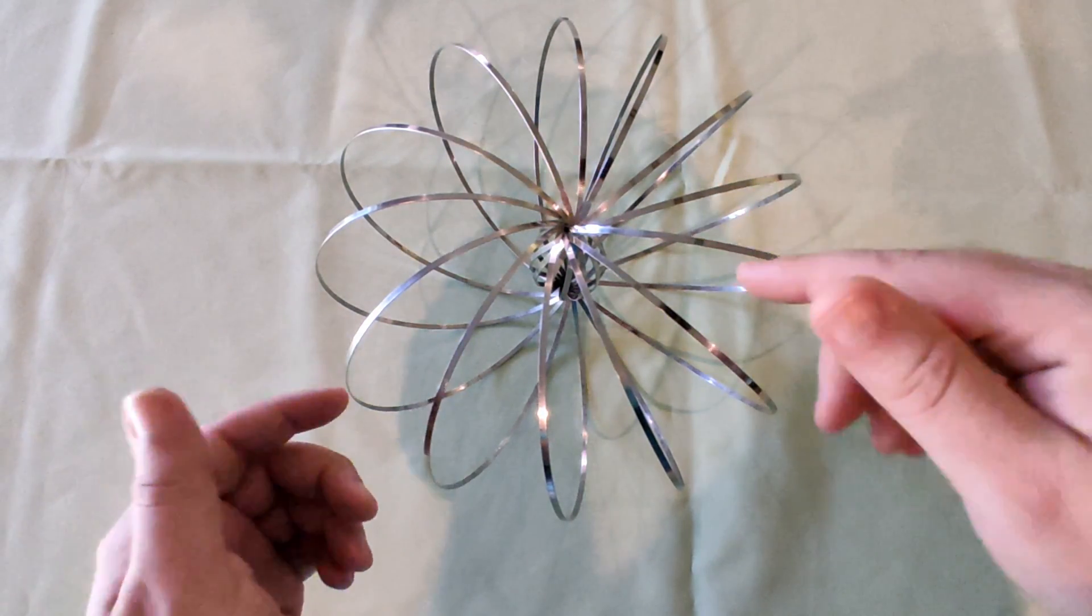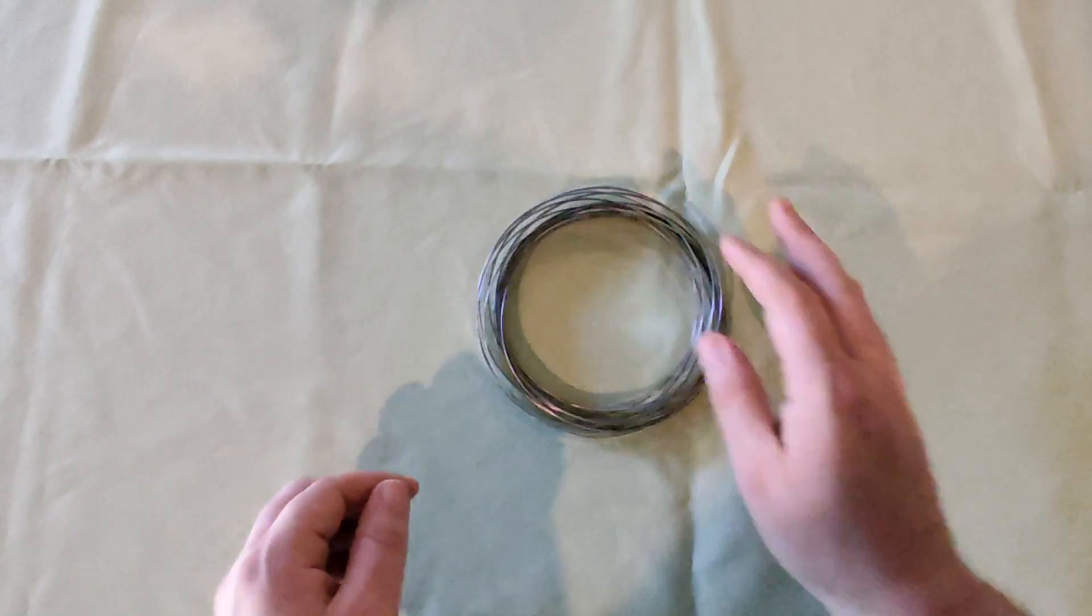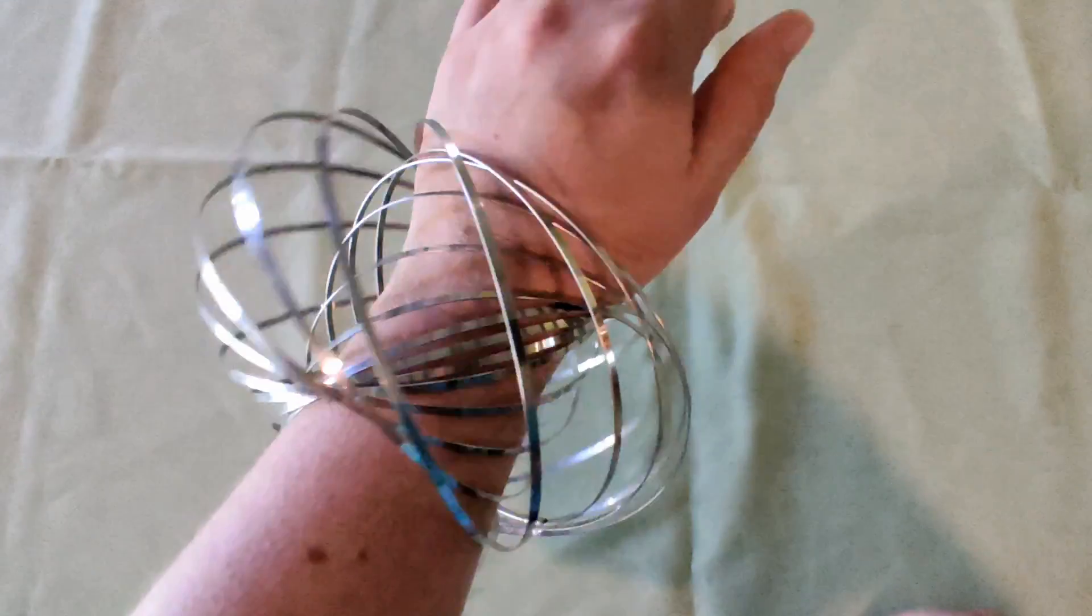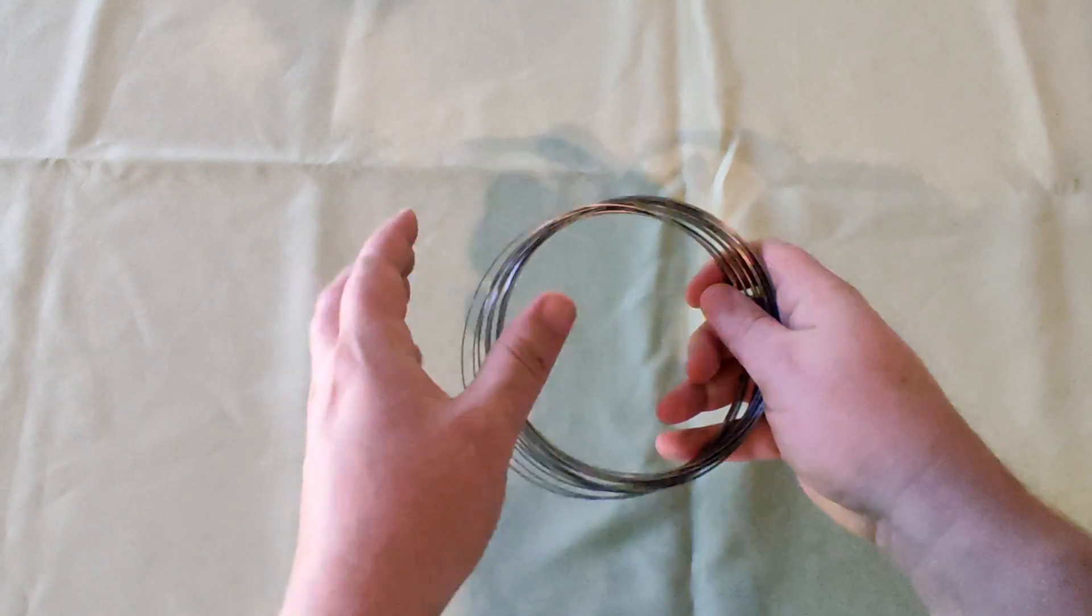And if you want to make it flat again, you kind of push on it and spin like this. It turns back flat. You can also wear it as a very unique bracelet just by putting it on when it's flat like that.